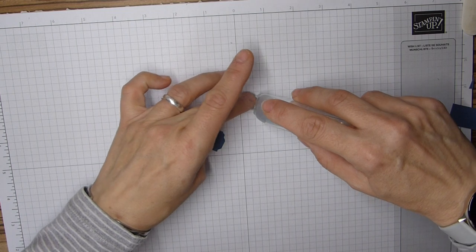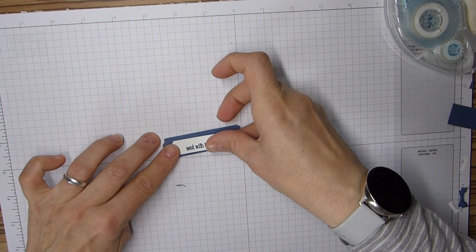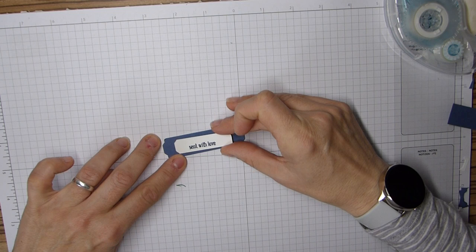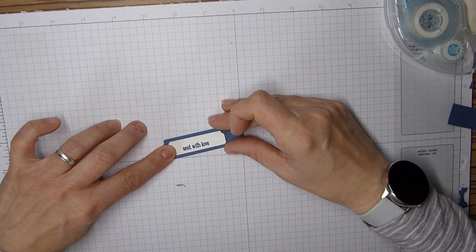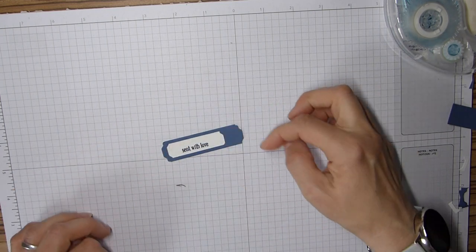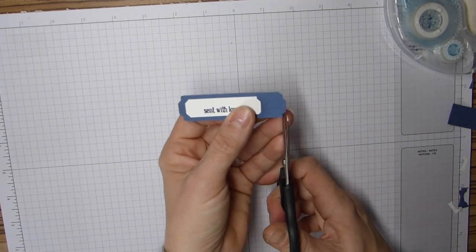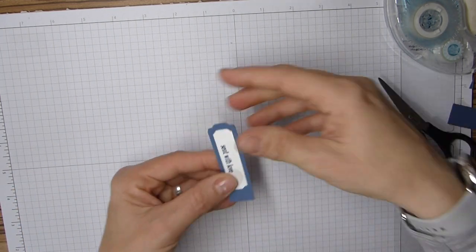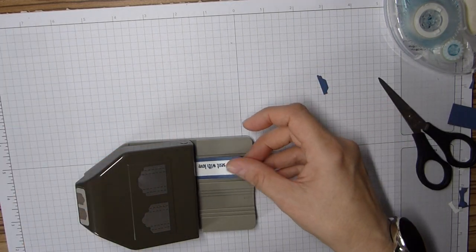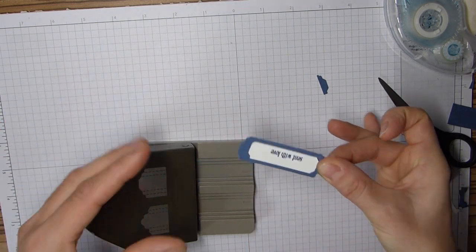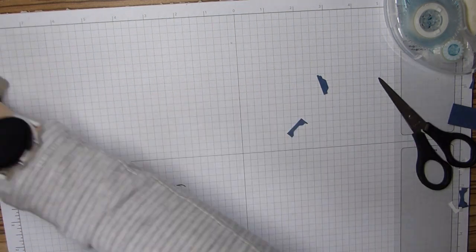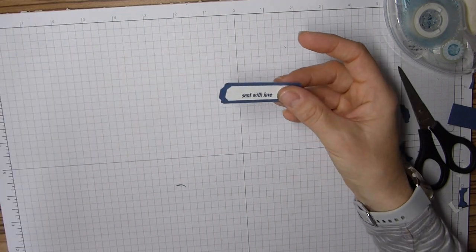A bit of adhesive on the back of that one and center it on your card. Now if you find like me that it's actually quite a lot longer than I needed, now I've stuck it on you can trim it and pop it back in making sure it's straight and do it again, and that will just trim a little bit off.